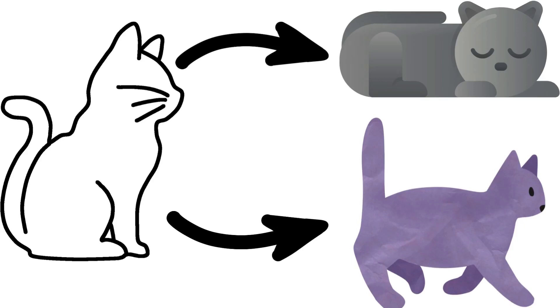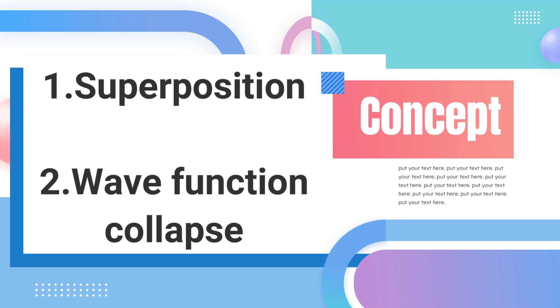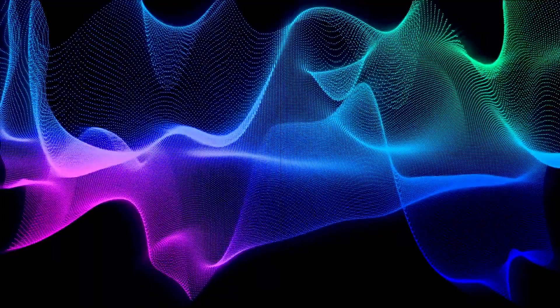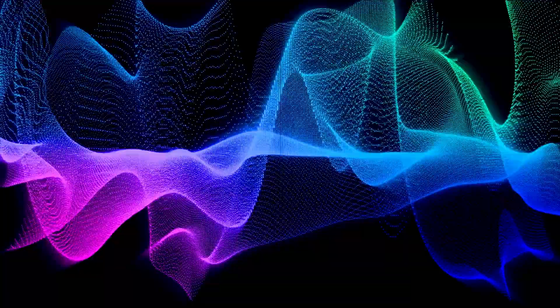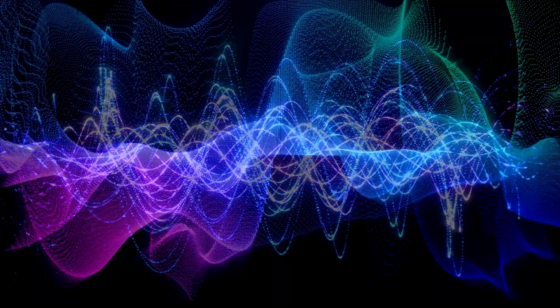Superposition refers to the idea that a quantum particle can exist in multiple states simultaneously until it is observed or measured, while wave function collapse refers to the process by which a quantum system's superposition collapses into a single definite state when observed or measured.